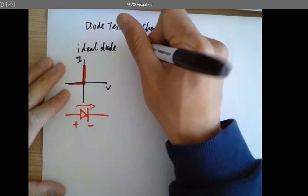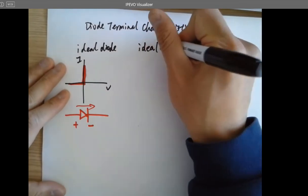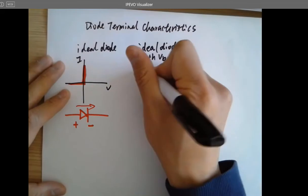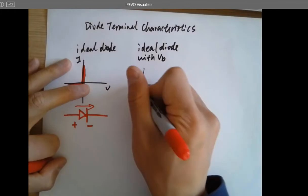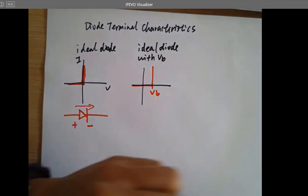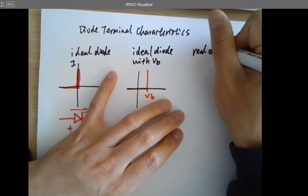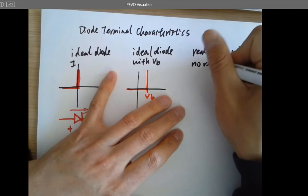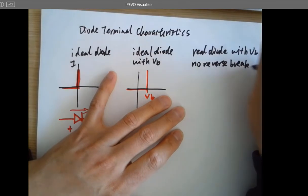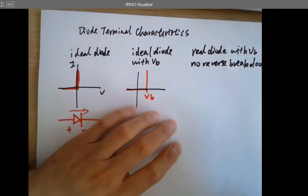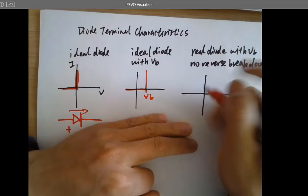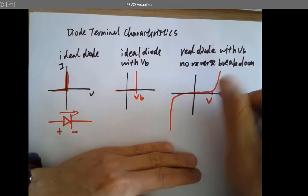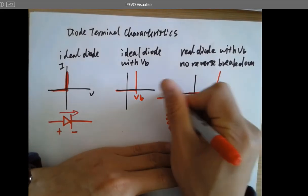If I say it's an ideal diode with VB — a built-in voltage — then it looks like this: here's VB. If I say it's a real diode with VB but no reverse breakdown, it looks like this: here's VB. No — not this part, sorry, that's Zener — it's going to be like this. Here's VB.